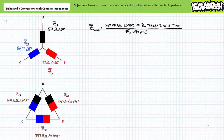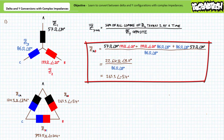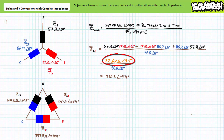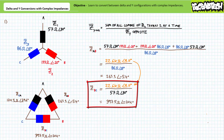Our first illustrated example features a Y configuration to be converted to an equivalent delta. To solve for Z-A-B, take the summation of all possible products of the Y impedances taken two at a time: Z1 times Z2, plus Z2 times Z3, plus Z3 times Z1, then divide by the opposite Y impedance Z3. The formula suggests Z-A-B is 263.3 ohms at negative 5.4 degrees. Save time and reuse this numerator for the subsequent conversions. For Z-B-C, divide the numerator by Z1, giving 397.5 ohms at negative 20.4 degrees.